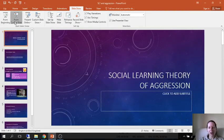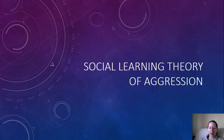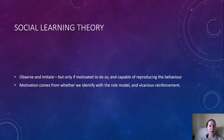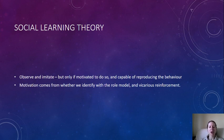This is the social learning theory of aggression, the second social psychological theory we're looking at — the first was frustration-aggression. Quick recap on social learning theory: the idea is that we observe a model and imitate them, but only if we're motivated to do so and capable of reproducing the behavior. We're motivated depending on who the role model is and how their behavior is reinforced.